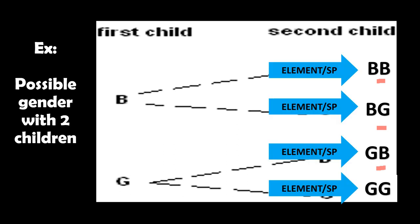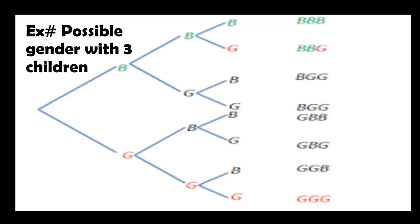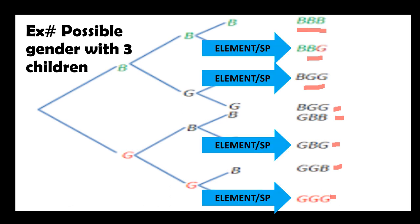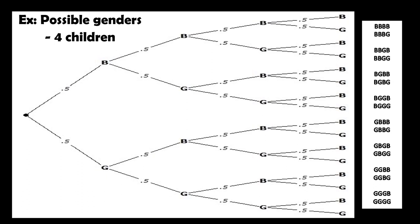Possible gender with two children: boy-boy, boy-girl, girl-boy, girl-girl — each one is an element, and the total of all possible outcomes is the sample space. Possible gender with three children: boy-boy-boy, boy-girl-girl, boy-boy-girl — each is an element. Possible genders for four children: all the combinations listed in the corner, like girl-boy-girl-boy or girl-boy-girl-girl or all girls — each one is an element.